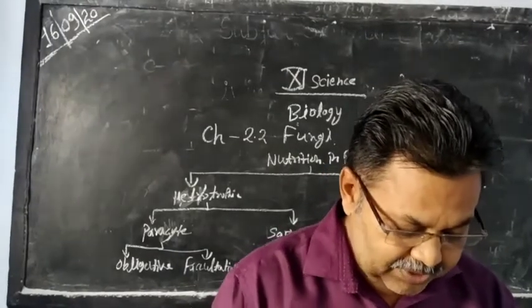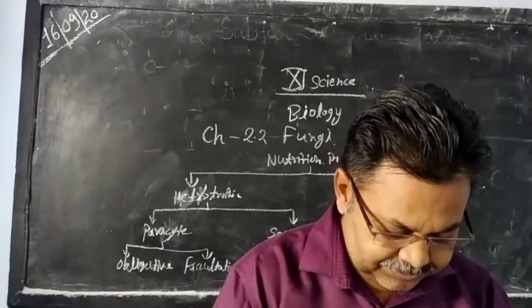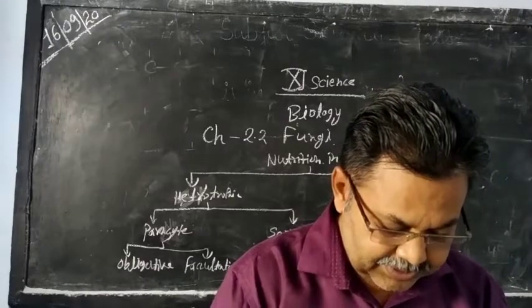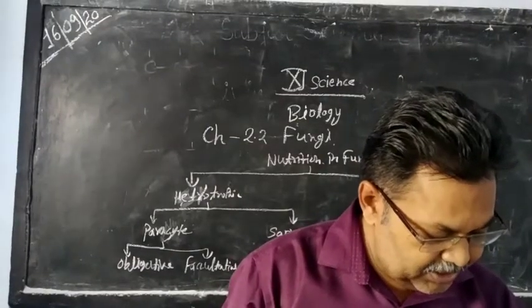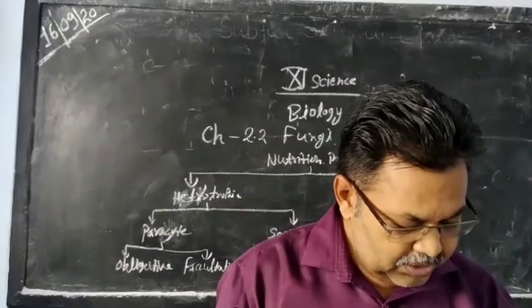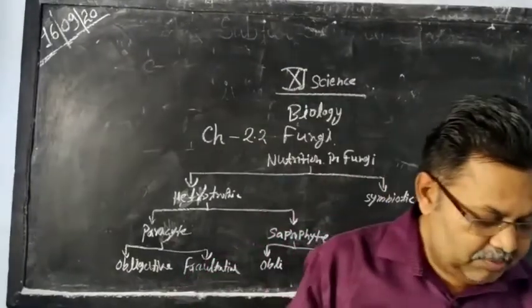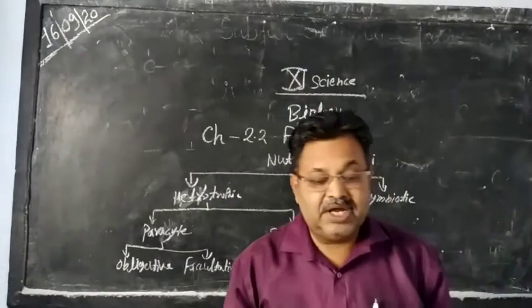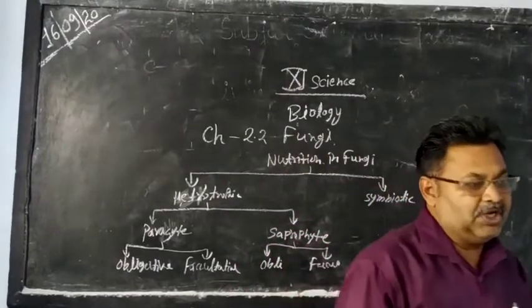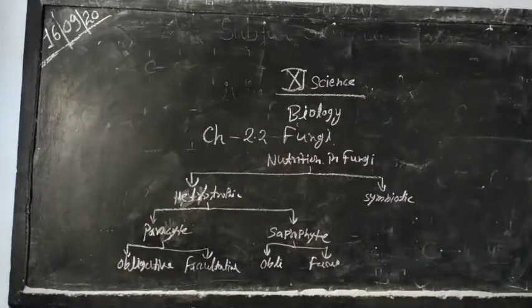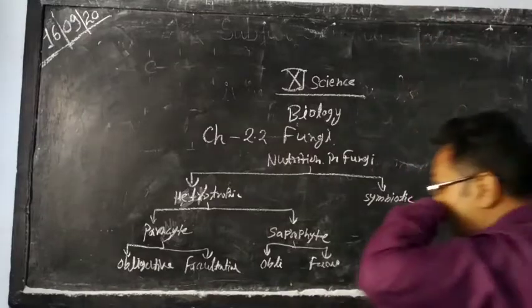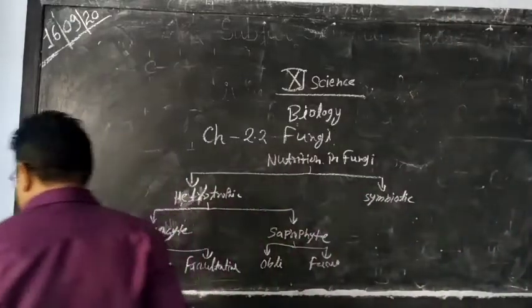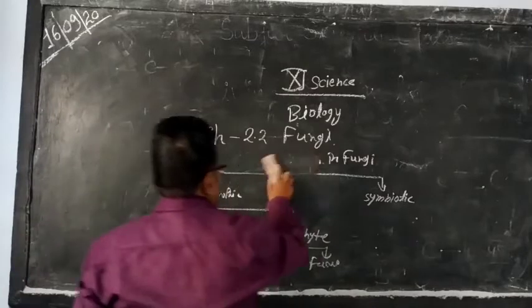Our next topic is reproduction in fungi. There are three types of reproduction: vegetative, asexual, and sexual. We will discuss these three modes of reproduction one by one. The first is vegetative mode of reproduction.